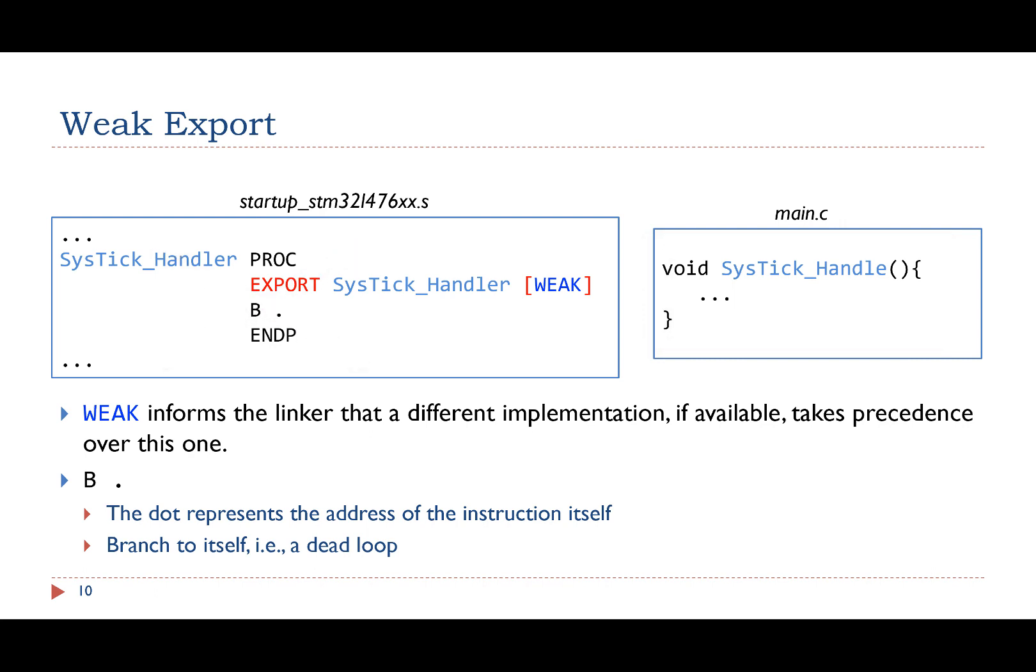The weak keyword is a simple way to provide a default implementation. If a more specialized implementation is available, the default implementation is ignored automatically when object files are linked together to build the final executable.